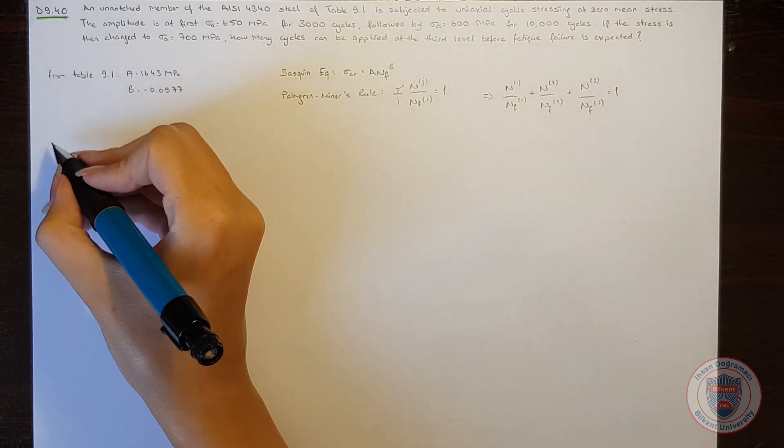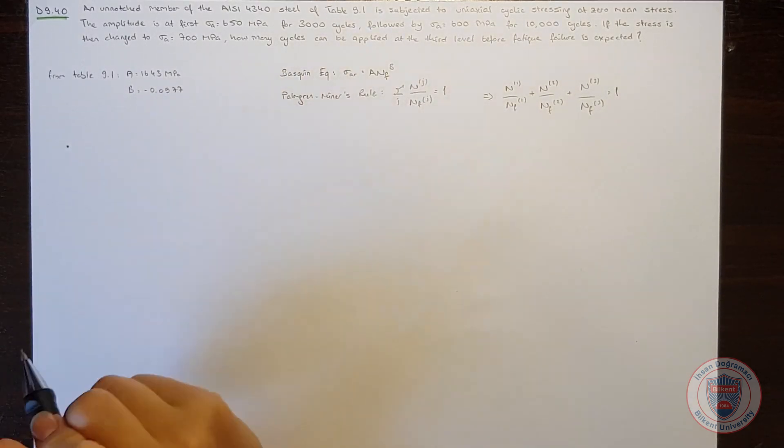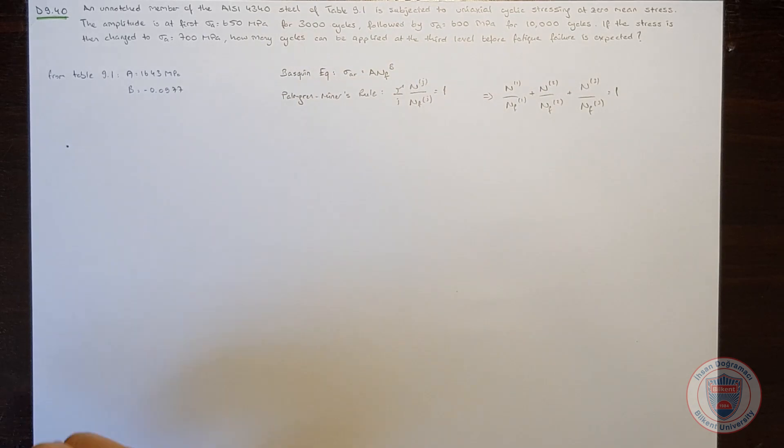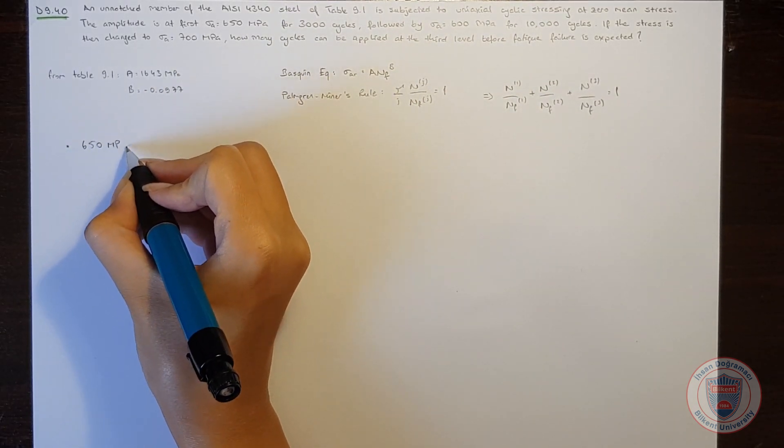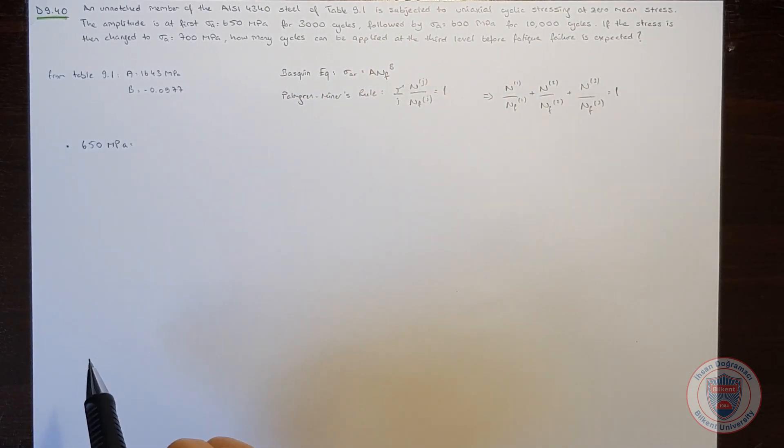Let's start with the first level. At the first level, the stress amplitude is equal to 650 MPa, and according to the Baskin equation,